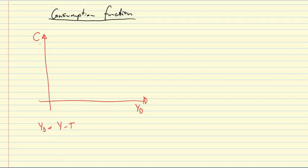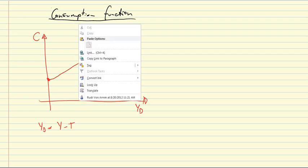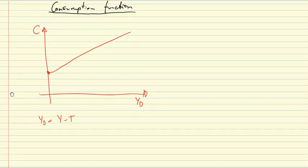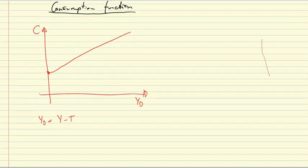Now the consumption function in this C-YD space looks like this. It has an intercept, a positive intercept, and a positive slope, an upward sloping straight line. So what does that mean? Well suppose that we start out right here.